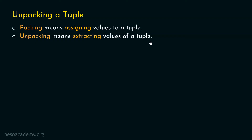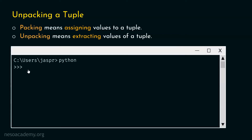We already know how packing works and how to create and assign values to a tuple. Now let's learn how to unpack a tuple with a simple example. Let's open the command prompt and activate the Python interactive shell. We'll type: cars = (Audi, Mercedes, BMW). There are three items in this tuple, and assigning these values is called packing.